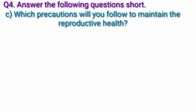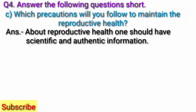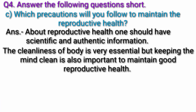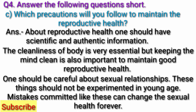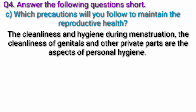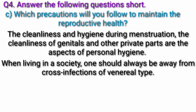Question C: Which precautions will you follow to maintain reproductive health? Answer: About reproductive health, one should have scientific and authentic information. Cleanliness of the body is very essential, but keeping the mind clean is also important to maintain good reproductive health. One should be careful about sexual relationships; these things should not be experimented with at a young age. Mistakes committed like this can change sexual health forever. Cleanliness and hygiene during menstruation, cleanliness of genitals and other private parts are aspects of personal hygiene. When living in a society, one should always be away from cross infections of venereal type.